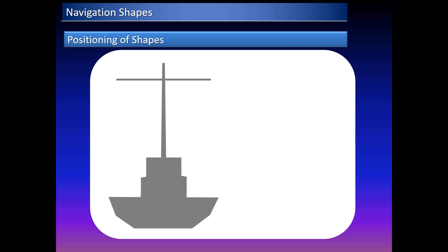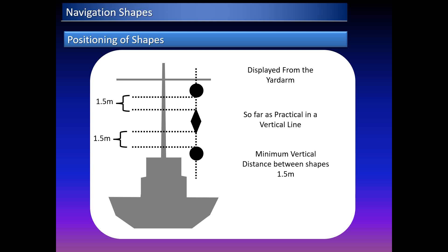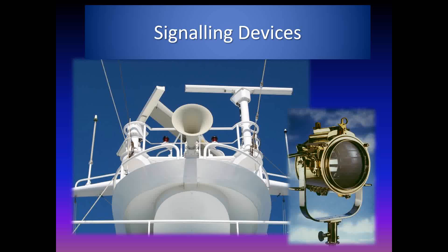These examples illustrate vessels in different conditions; for a full description, refer to the collision regulations. Shapes are to be displayed at the yard, dome, monkey island, or above the bridge in a vertical line, or as far as practicable in a vertical line. The minimum vertical distance between two shapes displayed in a line must not be less than 1.5 meters, so that observers at a distance can easily distinguish shapes from one another.